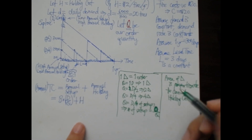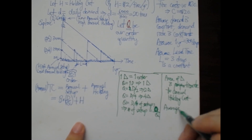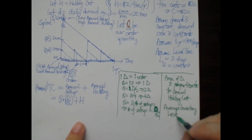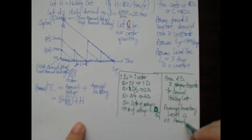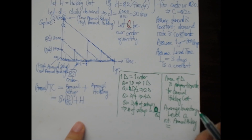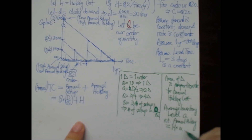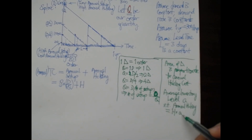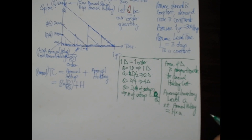The bigger the area, the larger the annual holding cost. Therefore we need to find an average inventory level — call it 'a' — such that annual holding cost equals h times the average inventory level. The average inventory level 'a' gives us a convenient summary constant, as if inventory never moved and was stored at quantity 'a' throughout the year, so that multiplying by h gives us the annual holding cost.